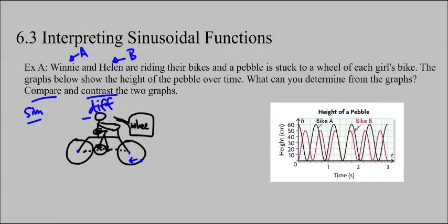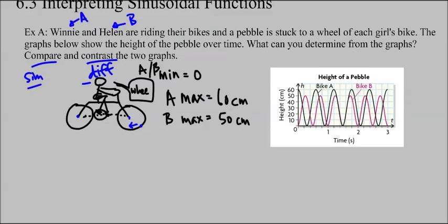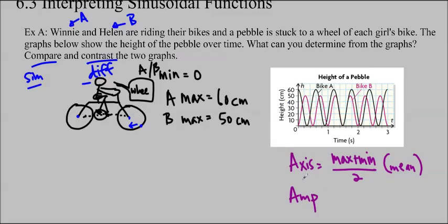Here we have these two graphs and we're going to think about how Winnie and Helen are riding their bikes. The first thing we want to find is always the minimum. So the minimum here is zero for both of them. And the maximum for Winnie is 60 centimeters. And the maximum for Helen is 50 centimeters. You can just read that right off the graph. This is actually really useful because it's going to give us two things. If you want to memorize the formulas, you can. They're actually really helpful. The axis is equal to max plus min divided by 2, so the average of the two, the mean. And the amplitude is max minus min divided by 2.